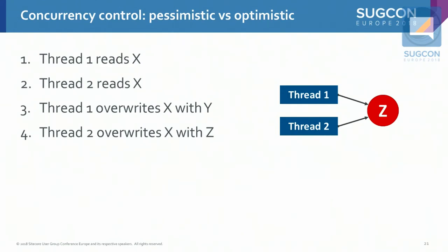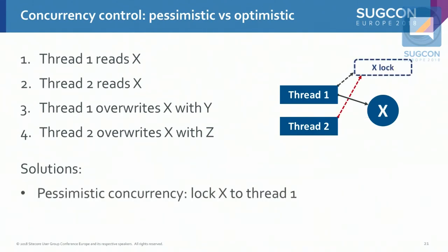How can we solve this? In pessimistic concurrency, every thread will attempt to lock the resource. In this example, thread one will acquire the lock, and thread two will not be able to acquire the lock. This means thread one has exclusive access to this data — it can read it, it can write it — and only after it's finished can thread two work with this data. When thread two cannot acquire the lock, it can either wait, if it knows when the lock expires, or it can find some other purpose in life.